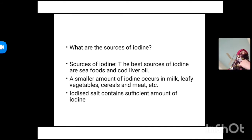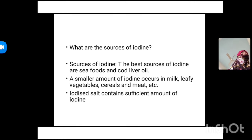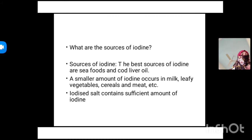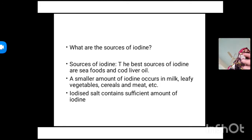Now let's begin with today's new questions. The first question is: what are the sources of iodine? The best sources of iodine are seafoods and cod liver oil. A smaller amount of iodine occurs in milk, leafy vegetables, and cereals. Iodized salt also contains a sufficient amount of iodine. This may be asked as a one-mark or two-mark question.